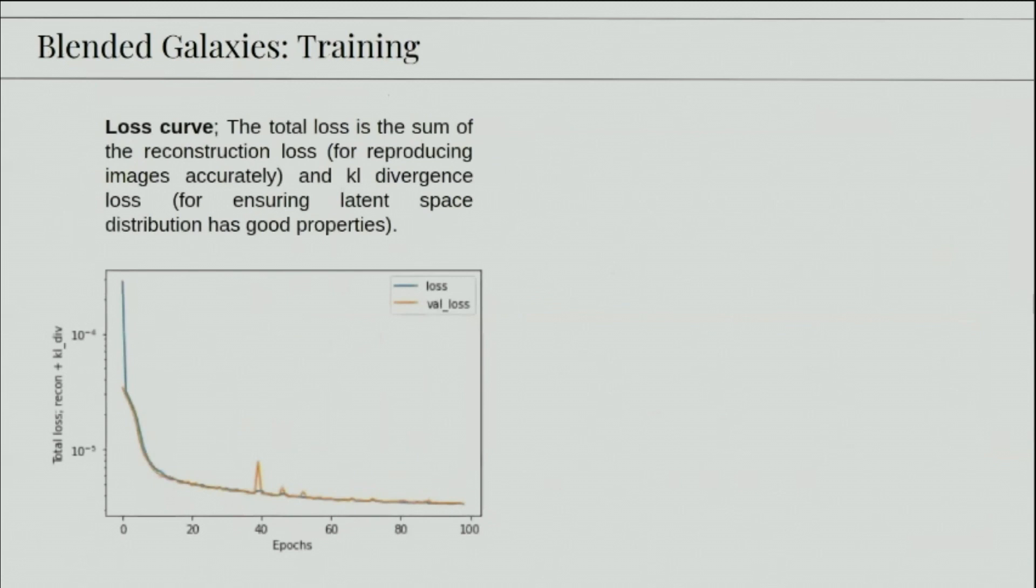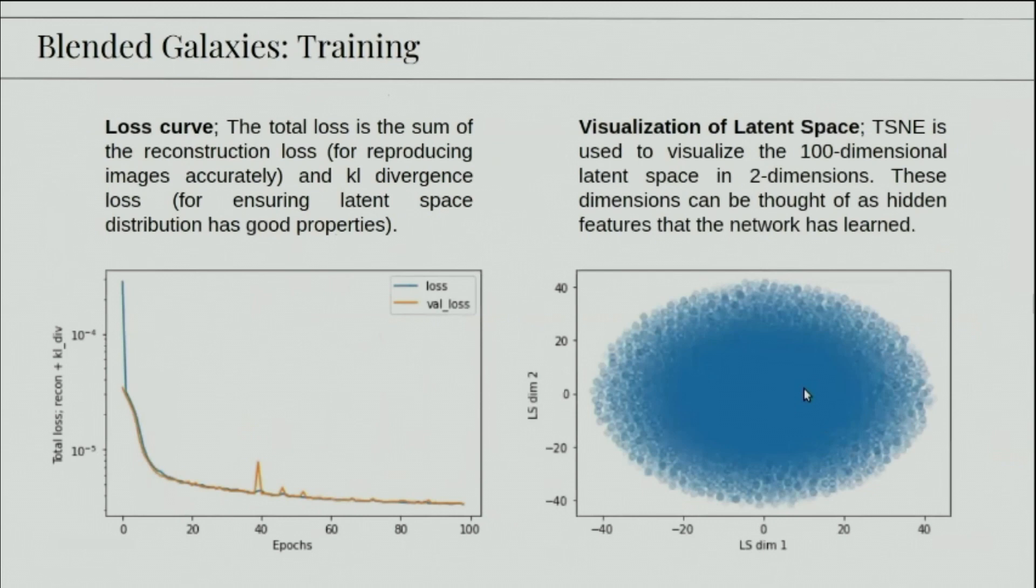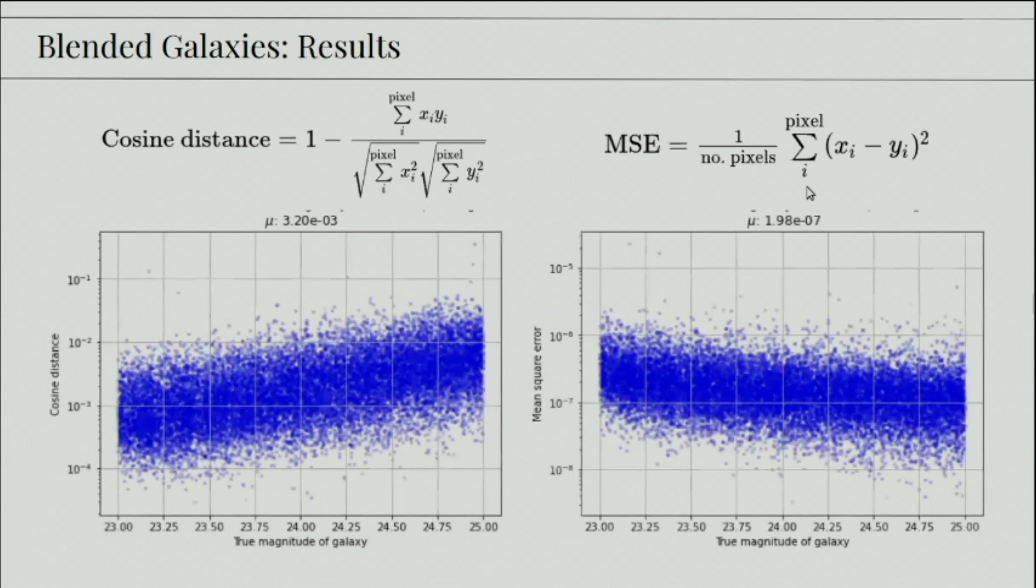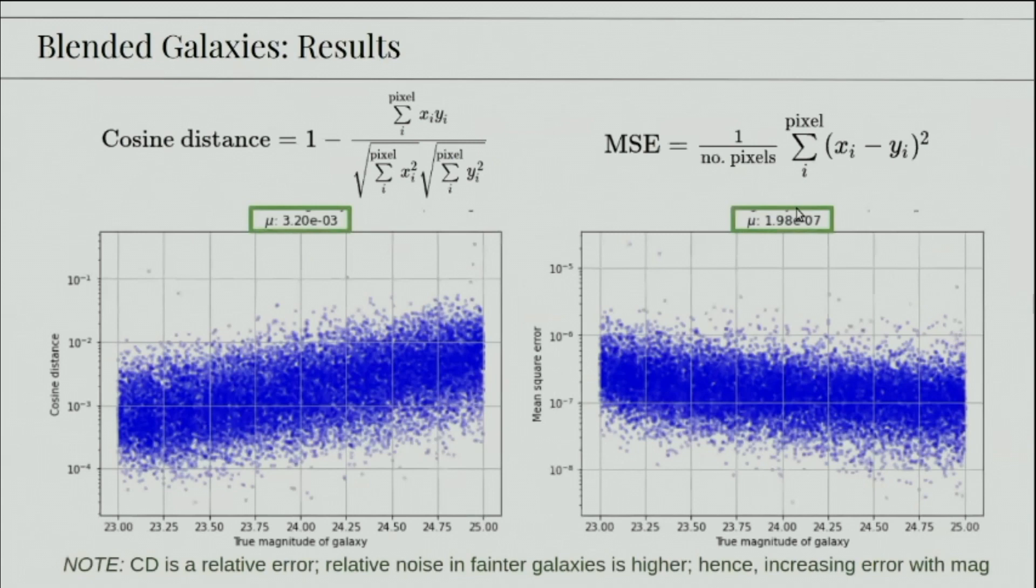Then the blended galaxies are trained using the decoder from the isolated galaxies. Here we see again the loss, the sum of the reconstruction and the KL divergence loss. Looks like it's converging. And we check that the latent space again shows a normal distribution. For the blended galaxies, the metrics perform well too. Again, of the order of 10 to the power minus 7 and 10 to the power minus 3.